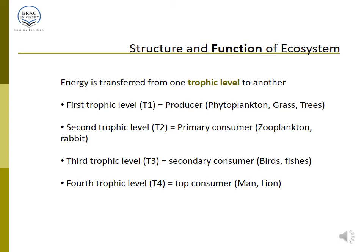Energy is transformed across different trophic levels, and we usually consider four trophic levels in a food chain. The first trophic level is the producers — phytoplankton, grass, and trees. The second trophic level is the primary consumers — zooplankton or rabbits that eat leaves. The third trophic level consists of secondary consumers — birds or fish that eat those rabbits or zooplankton. The fourth trophic level is the top consumers — humans, lions, and tigers. Sometimes a fifth trophic level exists, but it is very unusual.